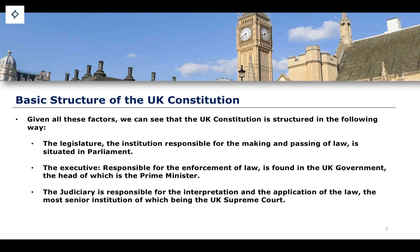However, when we look at the UK's system of separation of powers, we will note that it's a little bit more complicated. Even though there are three distinct branches within the UK system — a legislature, an executive, and a judiciary — they're not so separate in the same way as, for example, the United States system may be completely separate. We'll get to that when we start looking at the various principles of the UK constitution.